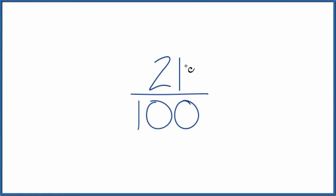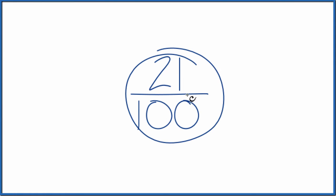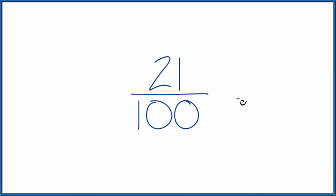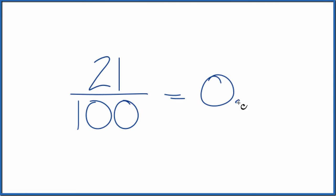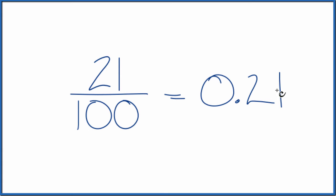Here's how you can change the fraction 21 one-hundredths to a decimal. There are a few ways. First, you could just divide 21 by 100 on your calculator, or you could divide it longhand. You'll end up with 0.21. So the fraction 21 one-hundredths equals the decimal 0.21. These are the same value; we've just written them differently.